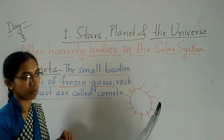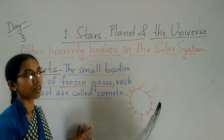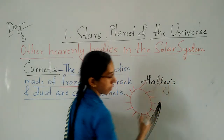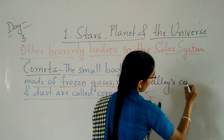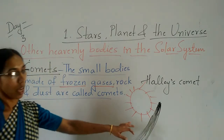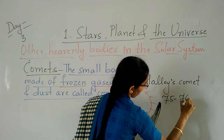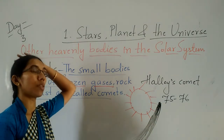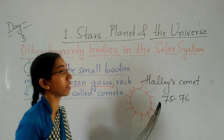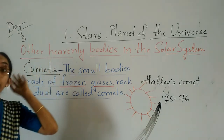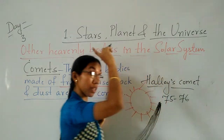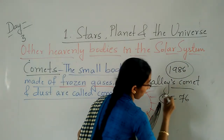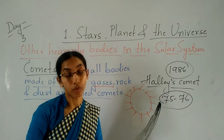The comet is then visible from the earth. The Halley's comet is visible from the earth every 75 to 76 years. It was last observed in 1986. So after 75 to 76 years from 1986, we can see Halley's comet again.